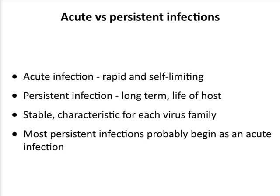Last time we talked about acute infections, which we defined as an infection that is self-limiting. It can be rapid, some of them are longer than others, but the real key is they're self-limiting — they're over and hopefully you recover. If you don't recover, it's still an acute infection. Today we're going to talk about persistent infections. The definition is that they last the lifetime of the host, and we're going to go through some examples of them today.